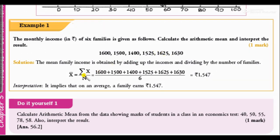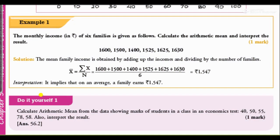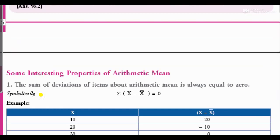x̄ is equal to summation x upon N. We add up the income of all family members and divide by the total number of families, which is 6. So 6 divided by 6 gives us 1,547. That is our arithmetic mean. This question carries only one mark — hope you understood.